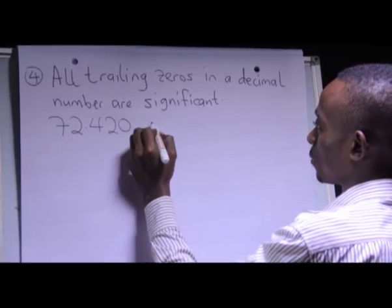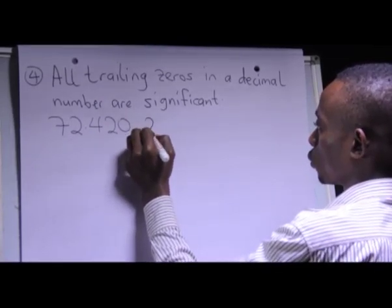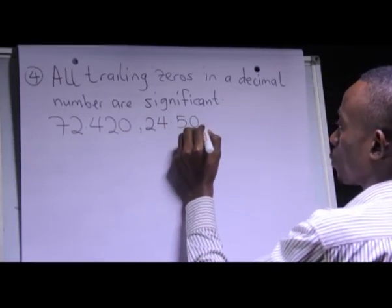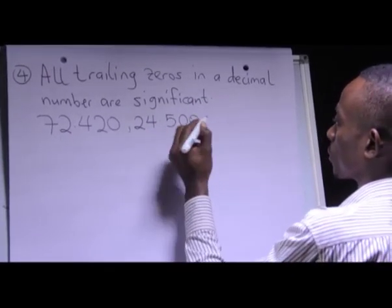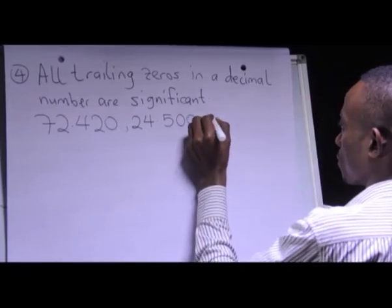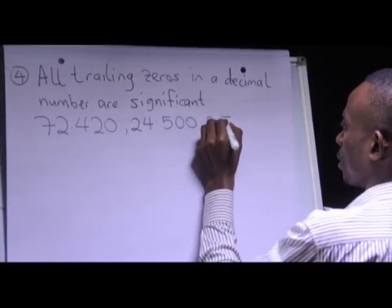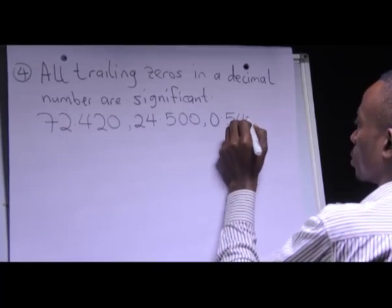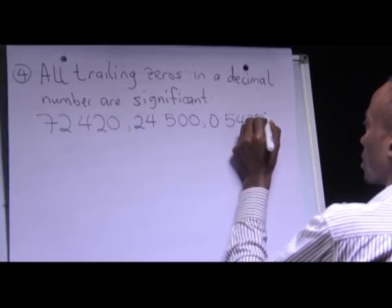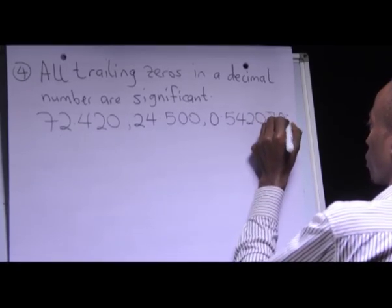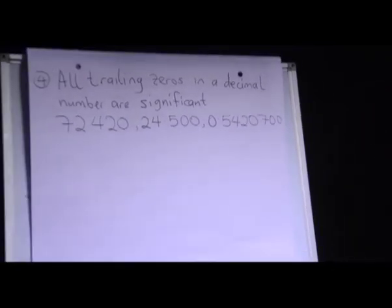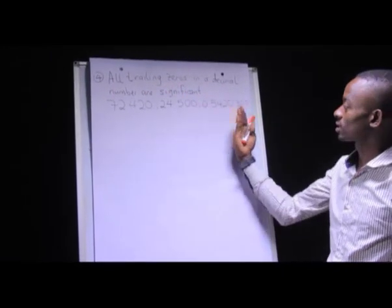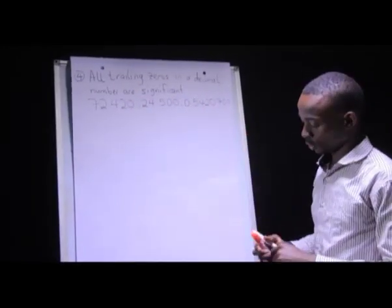We also have 24.500 and then 0.54270. I am required to find how many significant figures are in each of these three numbers.